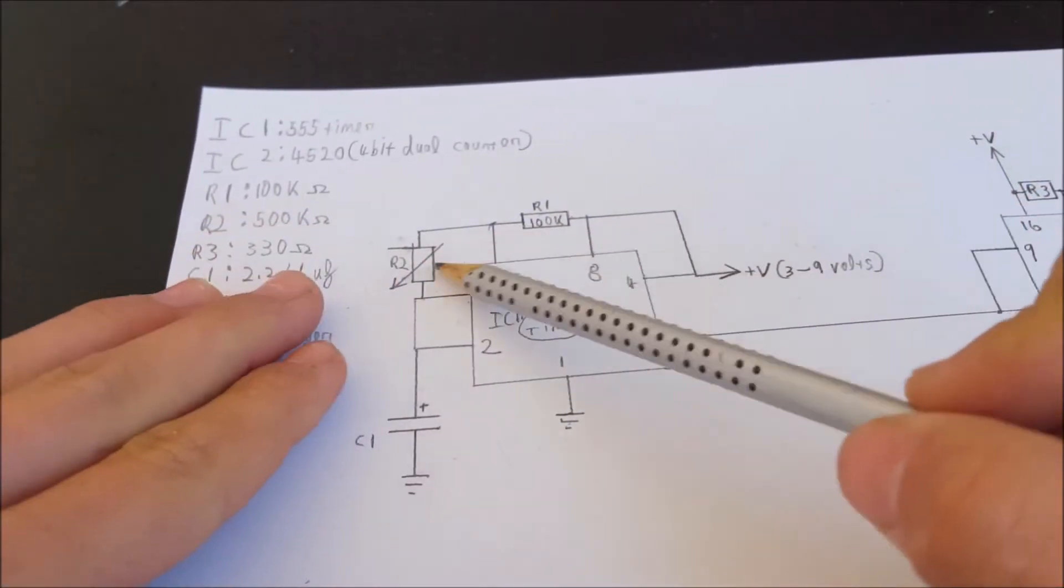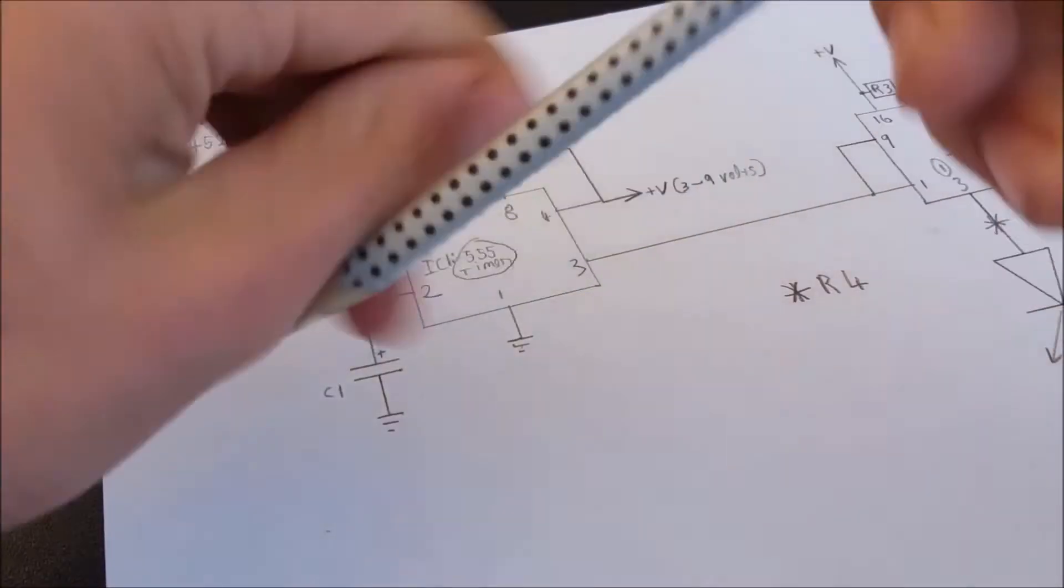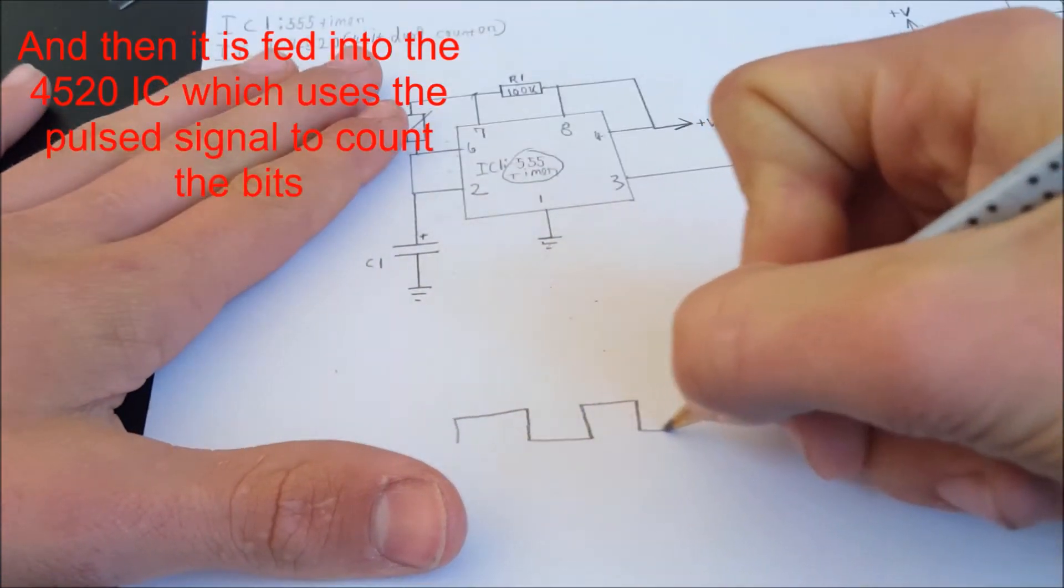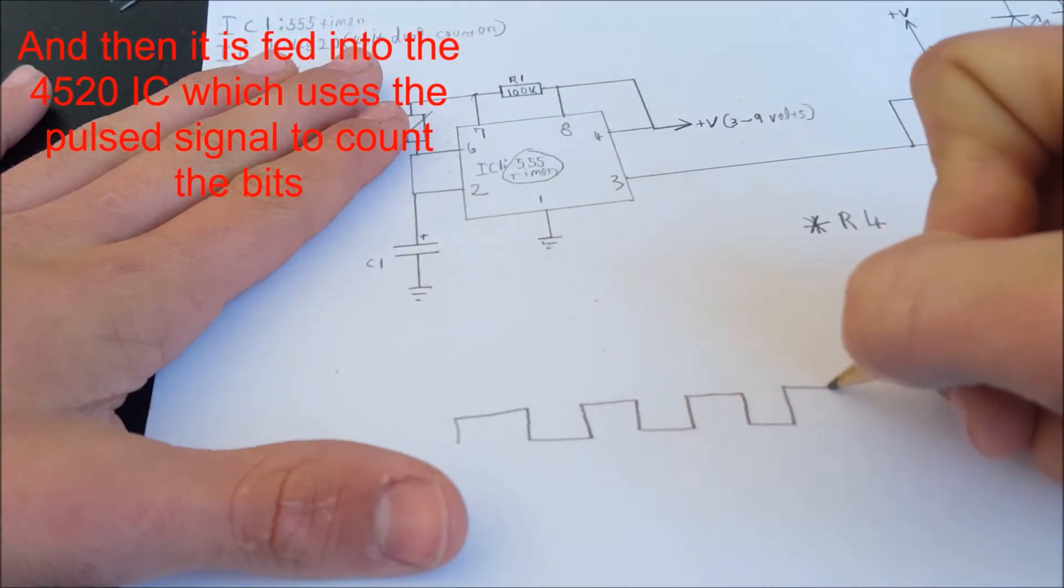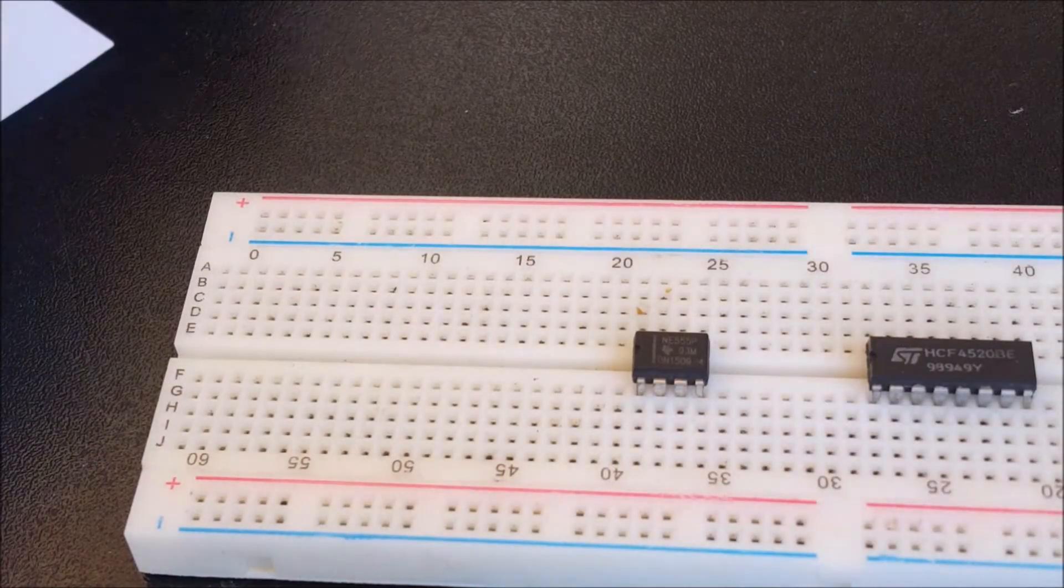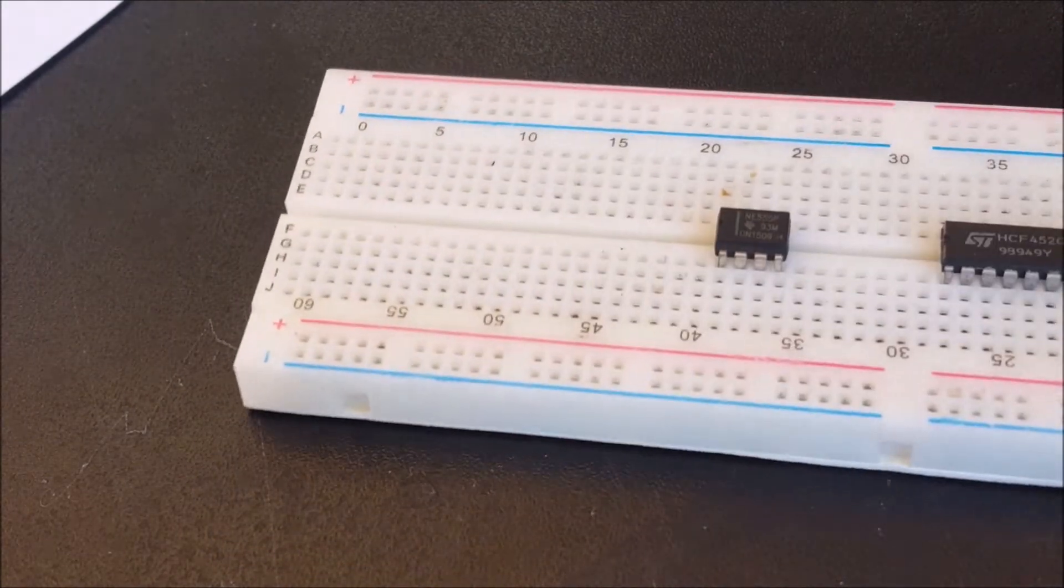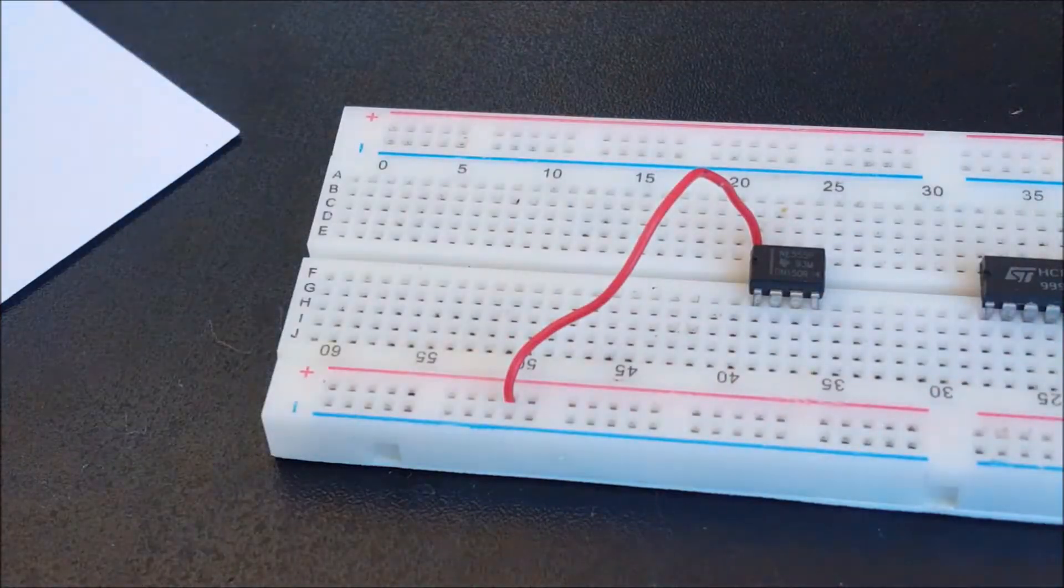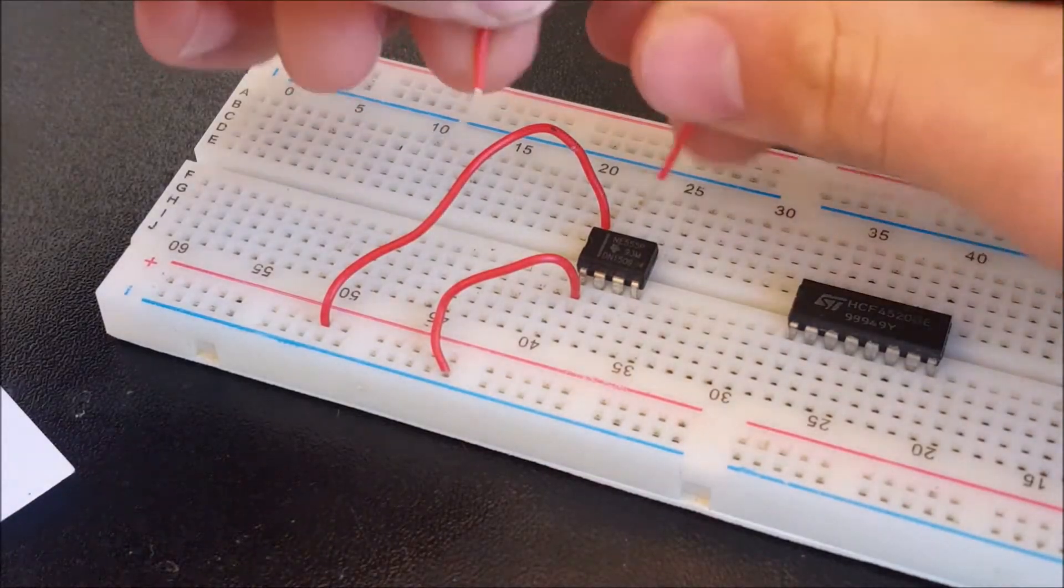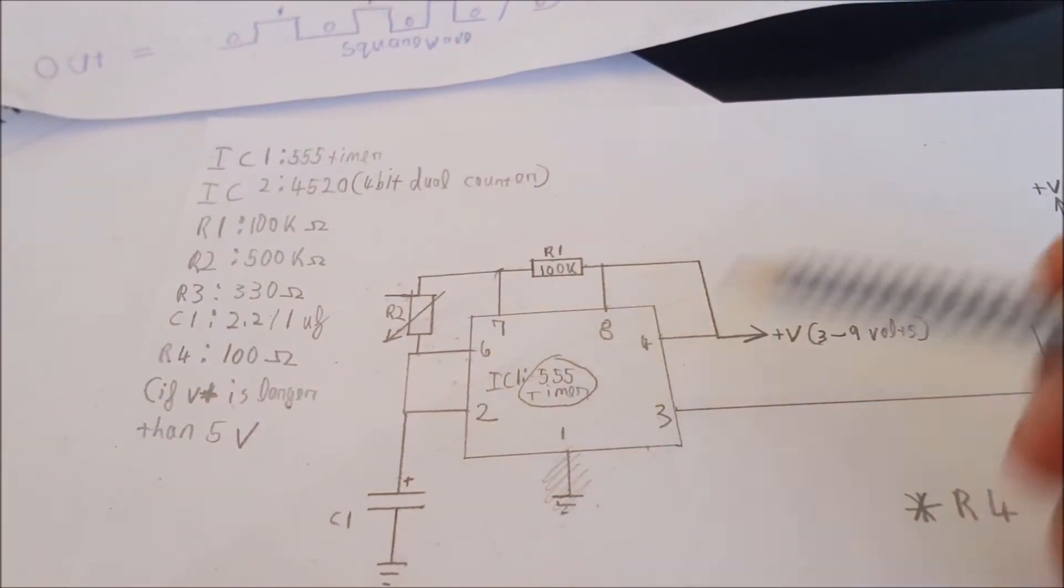So as you can see here, this is a generic 555 timer circuit. This generates a pulse signal which is a square wave which goes on like this. So let's start by making the very simple 555 timer circuit. The first thing that we are going to need to do is to connect pin 1 to ground and connect pin 8 to the positive rail.